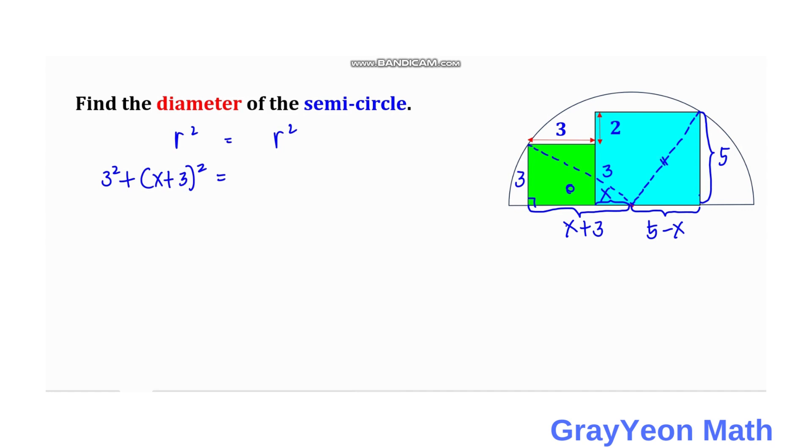This radius square is by these two sides. So this is 5 square plus 5 minus x square. So we have 9 plus x square plus 6x plus 9 is equal to 25 plus 25 minus 10x plus x square.